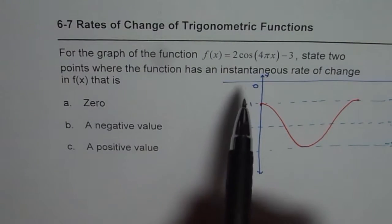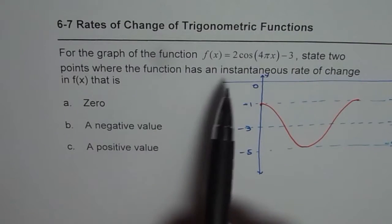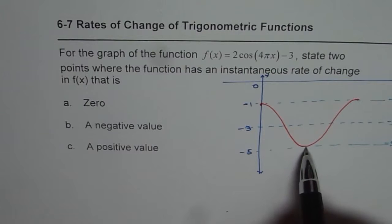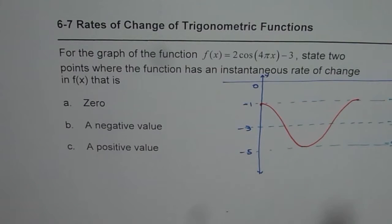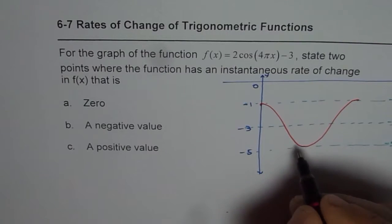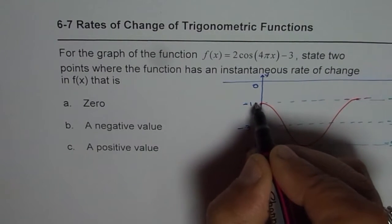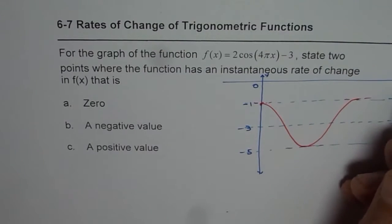Now, we need to find the points which have instantaneous rate of change as 0. So these are the points where you have a turning point. So for this particular function, clearly, those points are these. Now how to find their x value?